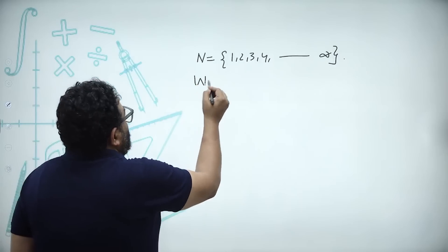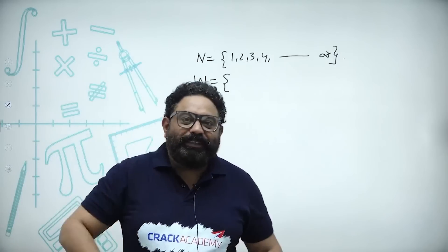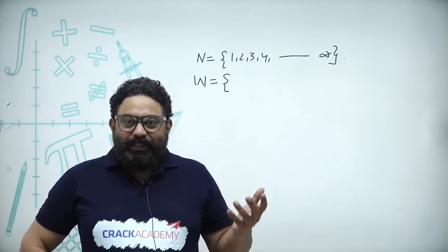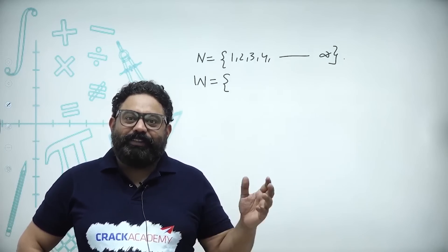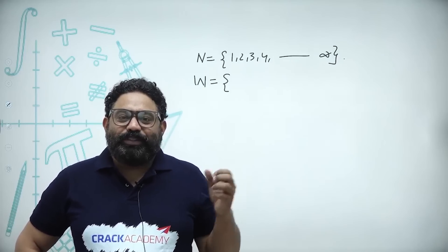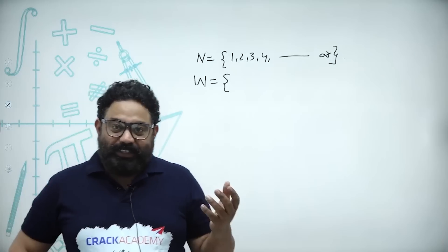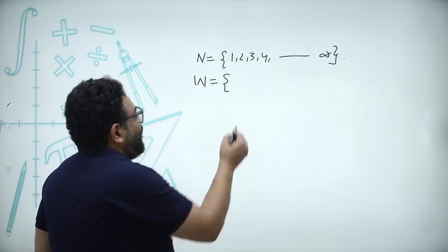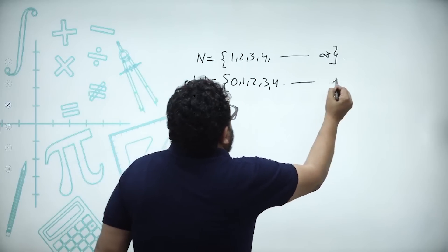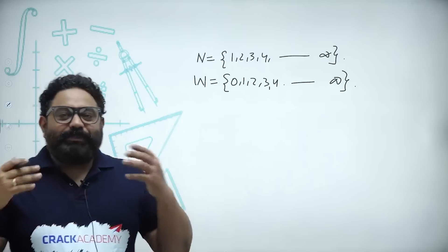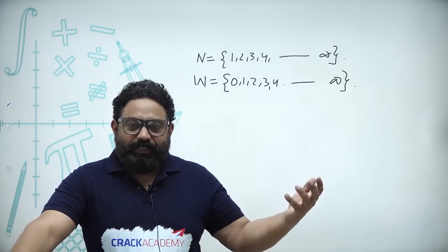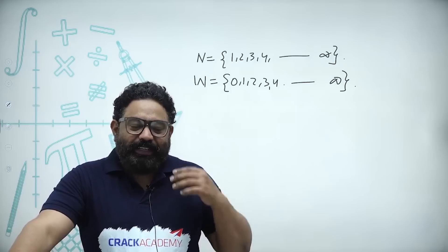Then comes whole numbers. There has to be a representation for something that does not exist. You had five toffees and you ate all of them — how many are left? None. So zero is the representation for none. Whole numbers are zero, one, two, three, four — till infinity. Number system began with counting numbers, and then extended to include zero.